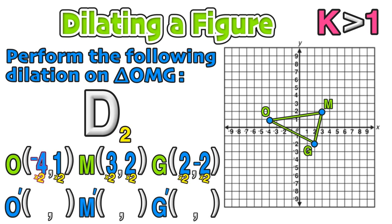Now negative 4 times 2 is equal to negative 8. 1 times 2 is just 2. 3 times 2 is equal to positive 6. 2 times 2 is equal to 4. Again, 2 times 2 is equal to 4. And finally, negative 2 times 2 is equal to negative 4.